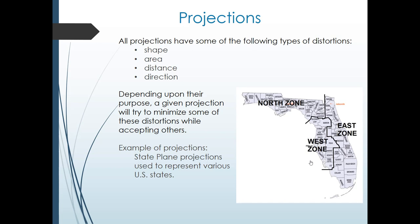As an example, all of the states in the United States have what are known as state plane projections, designed to represent those individual states as accurately as possible. In the case of Florida, there are actually three state plane projections: the east zone covering basically the eastern side of the state, the west zone covering most of the west side, and the north zone that covers basically the Florida Panhandle. That's just one example of a projection — there are lots and lots of different kinds of projections.